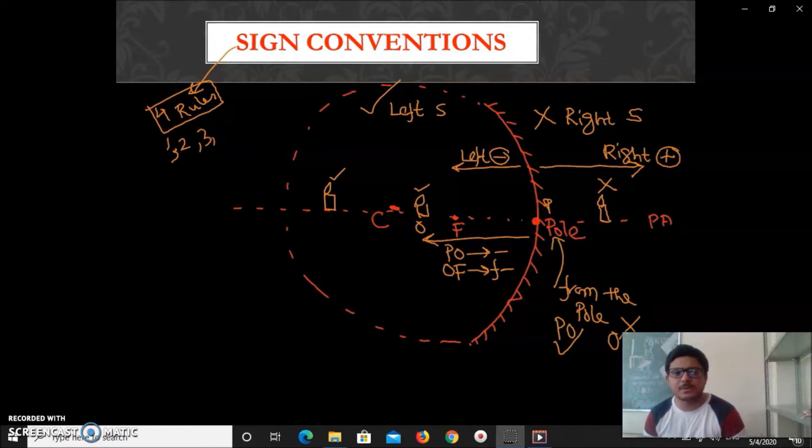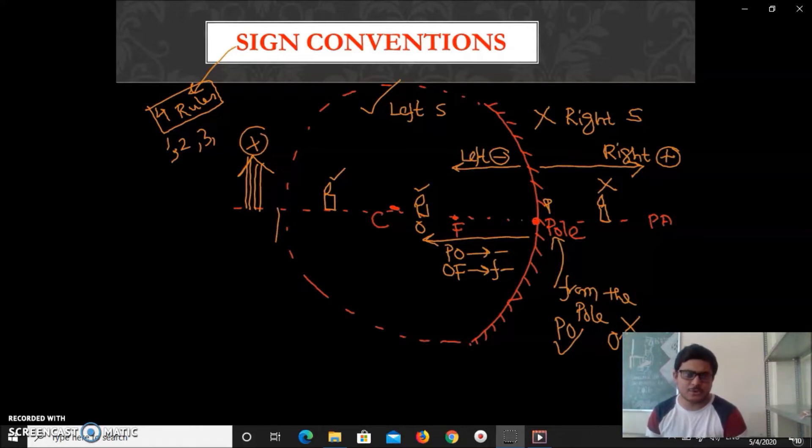According to fourth rule, anything situated on the upside of positive axis, positive y-axis, will be considered positive. Something situated in negative y-axis will be negative. So these four rules help us a lot for numerical problems.